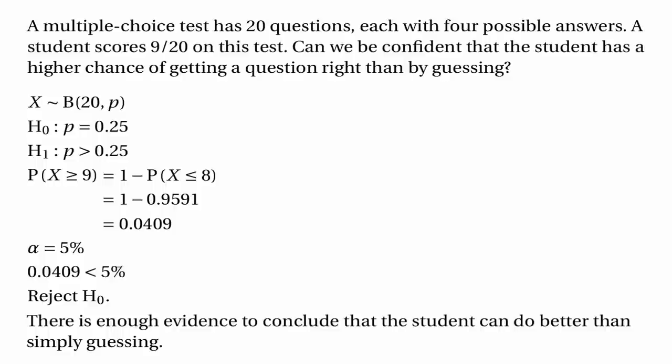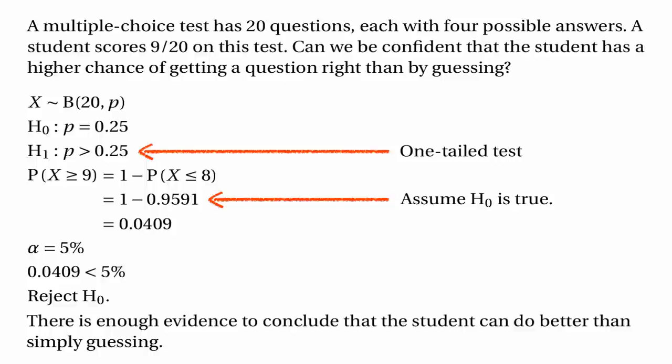There are a few features of this test to draw attention to. First, this is a one-tailed test because the alternative hypothesis says that the probability is greater than 0.25, so there's only one way we can end up rejecting the null hypothesis — that's if the student gets a large number of questions right. Second, the whole test works by assuming that the null hypothesis is true, so when calculating the probability of getting nine or more correct answers we assume the binomial distribution with parameters 20 and 0.25. Finally, when we draw a conclusion we express it in the context of the original problem, saying there's enough evidence to conclude that the student can do better than just by guessing.